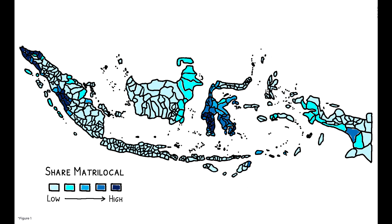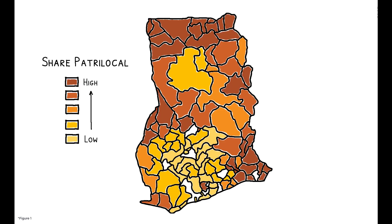These dynamics also generalize beyond the specific case of Indonesia. In an additional analysis, the author studies the 1972 introduction of a pension plan in Ghana, a country where patrilocality, rather than matrilocality, has traditionally been more prevalent.